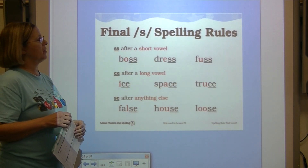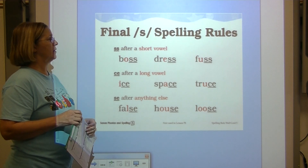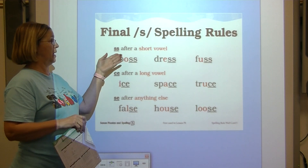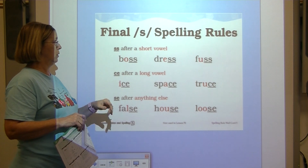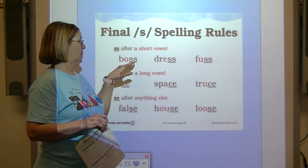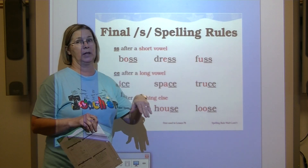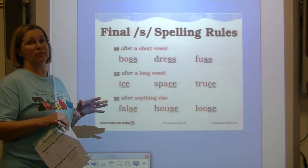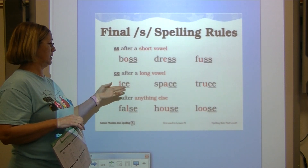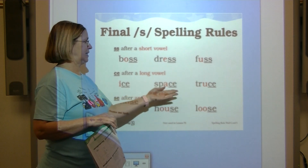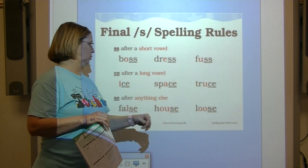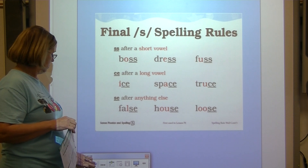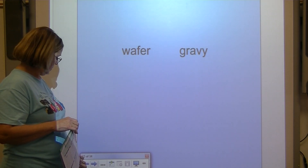To spell the S sound at the end of a word, we use SS after a short vowel — that goes back to the floss rule. Examples: boss, dress, and fuss. We use CE if it comes after a long vowel, as in ice, space, truce. We use SE if it comes after anything else.